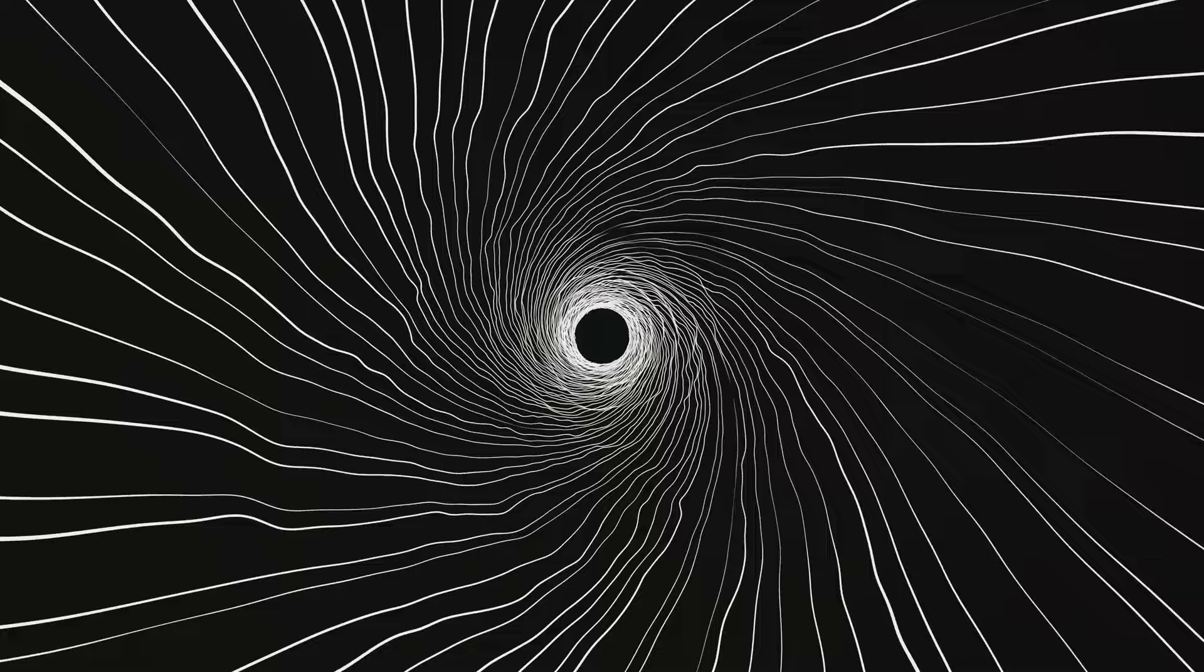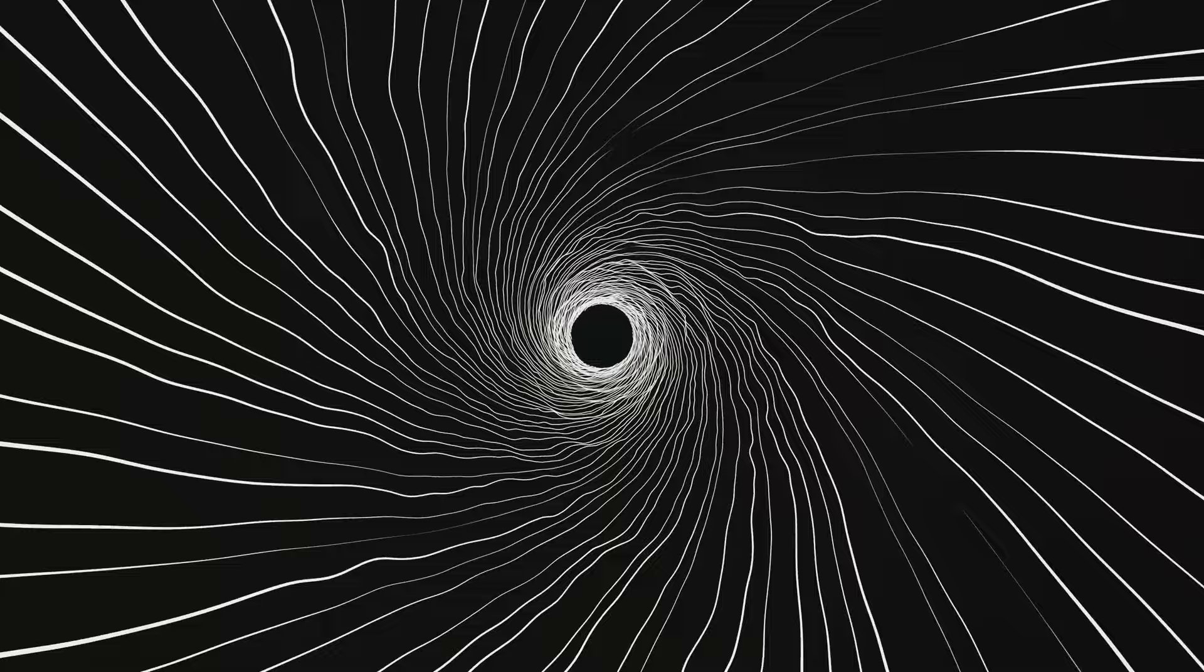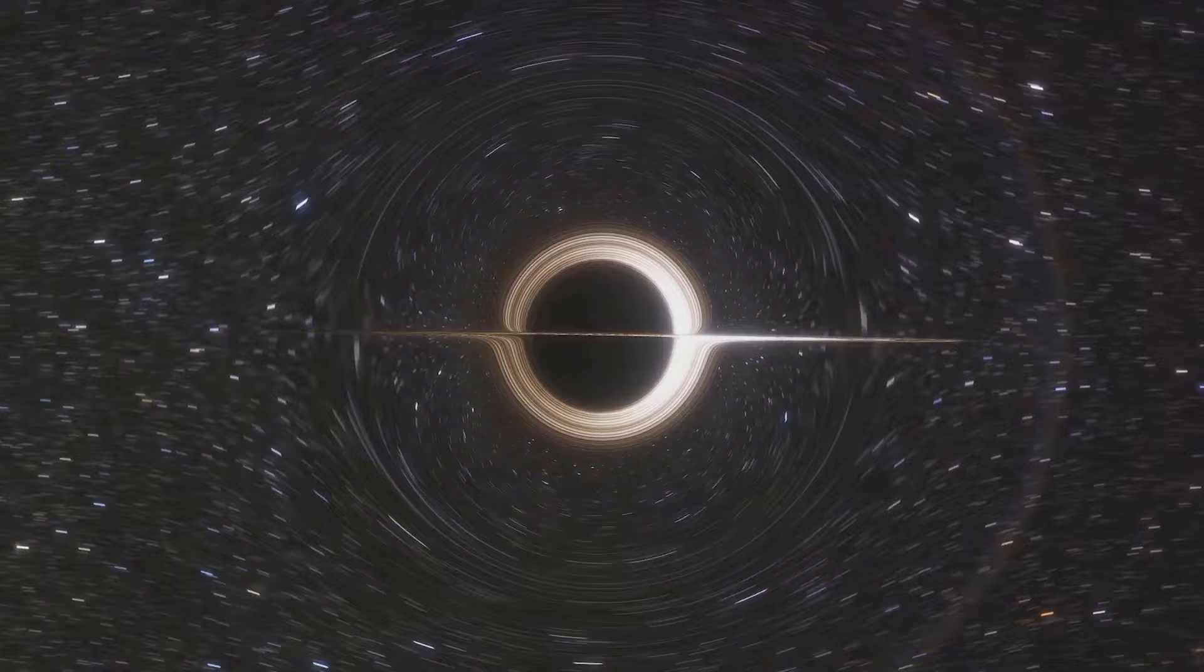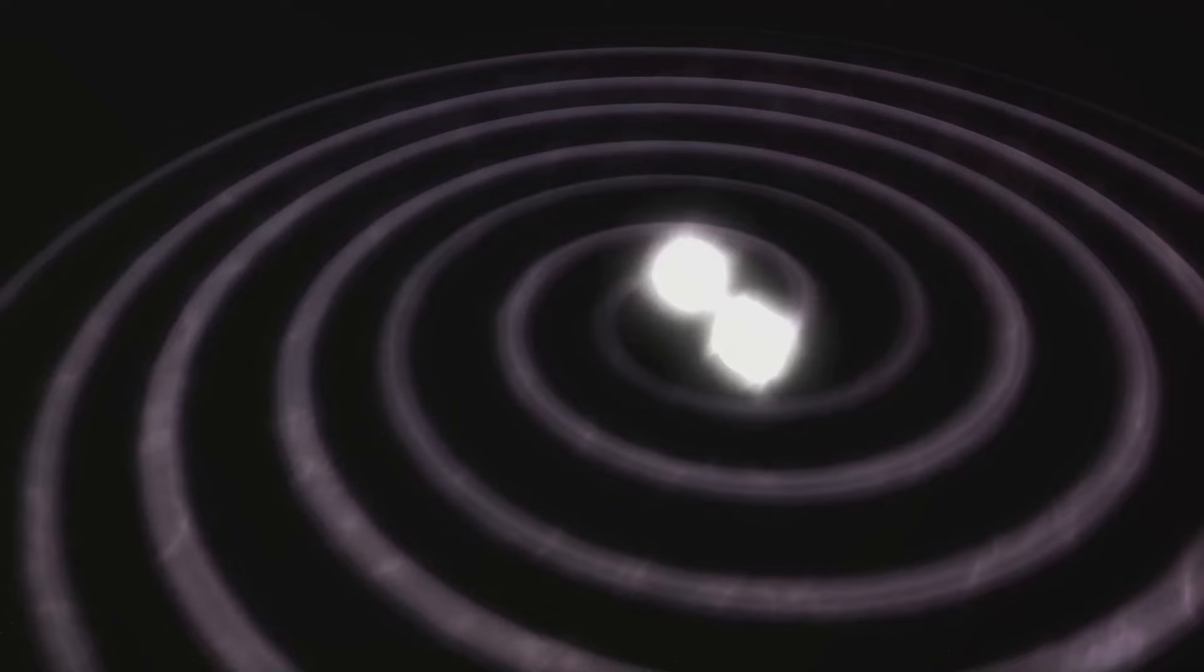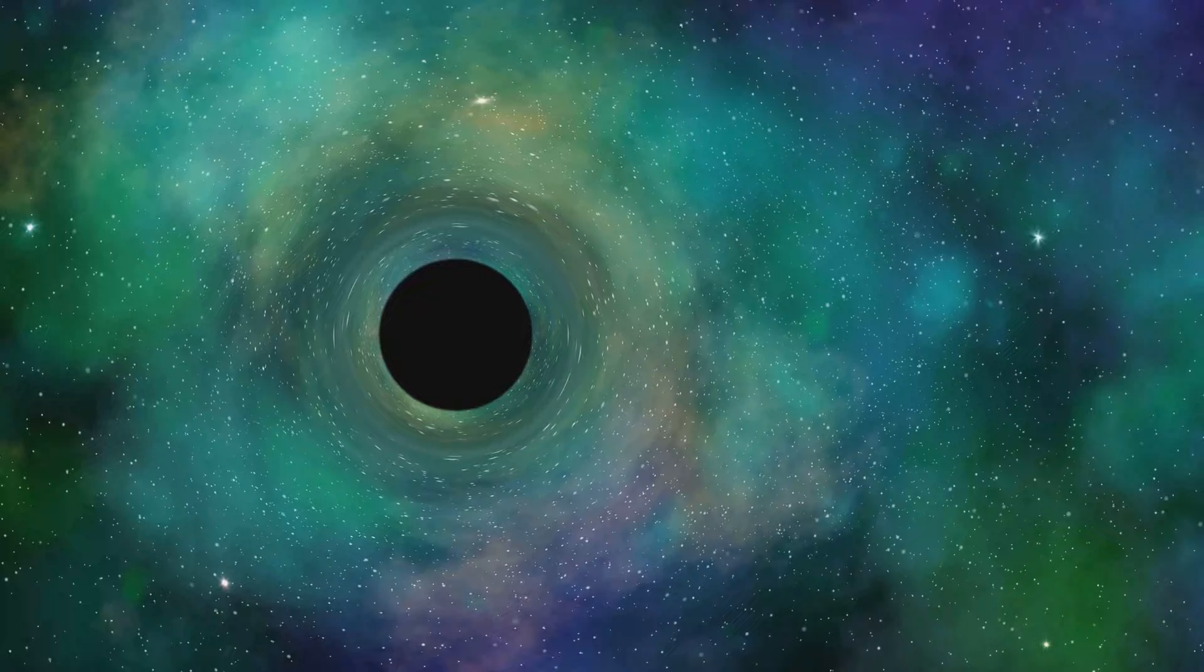Lastly, we have the theories that propose modifications to general relativity. These theories suggest that our understanding of gravity on the largest scales might be incomplete and dark energy might be an illusion produced by this gap in our knowledge. However, modifying general relativity is a complex task and any changes must account for all the existing observations that general relativity already explains so well.